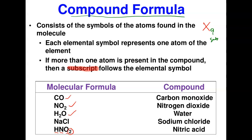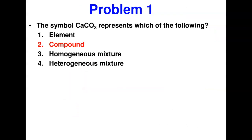Problem 1: The symbol for calcium carbonate represents which of the following? First, this is a pure substance. Second, this pure substance is made up of three types of atoms — calcium, carbon, and oxygen — that are chemically combined together. That fits the definition of a compound, and that becomes the answer.